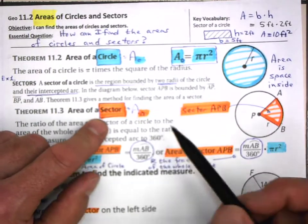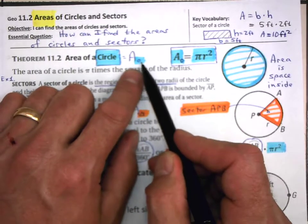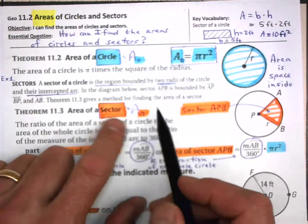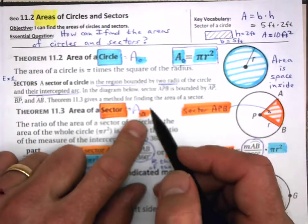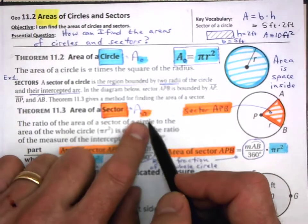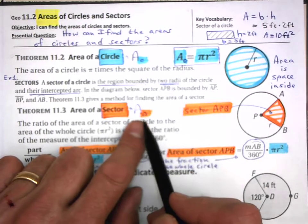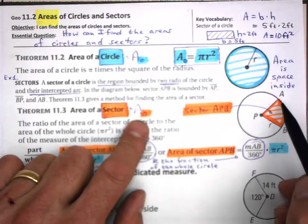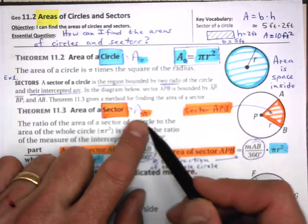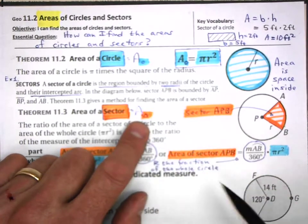To make things simpler, we can use this notation where 'area with a subscript of a circle' means area of a circle. And for sector, I'm using this special symbol — a little angle with an arc — rather than writing out 'area of sector' every time. That notation will help us work through the problems more efficiently.